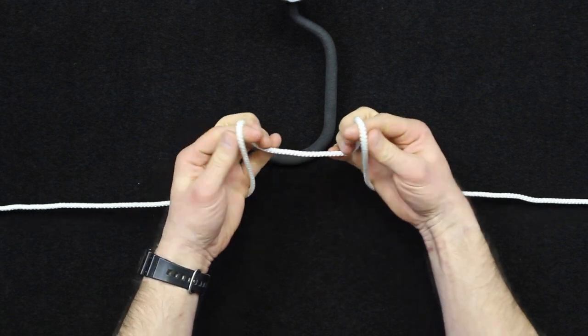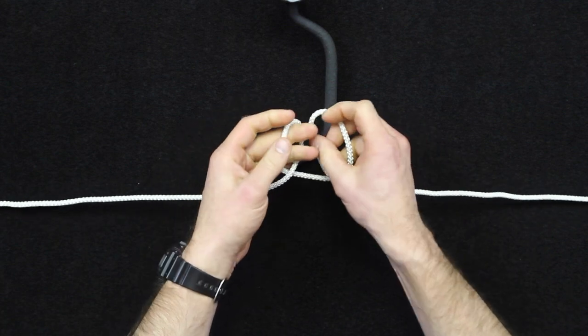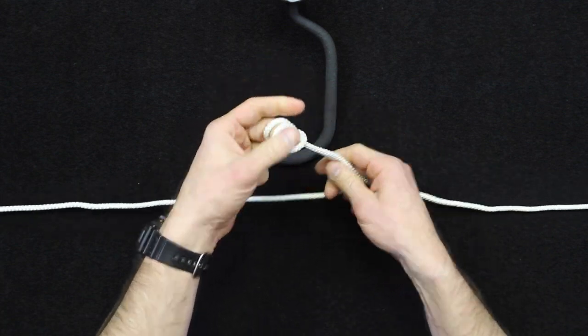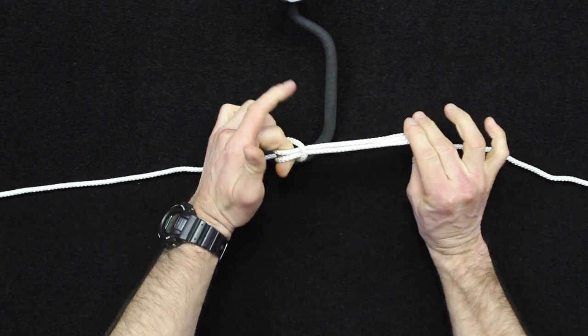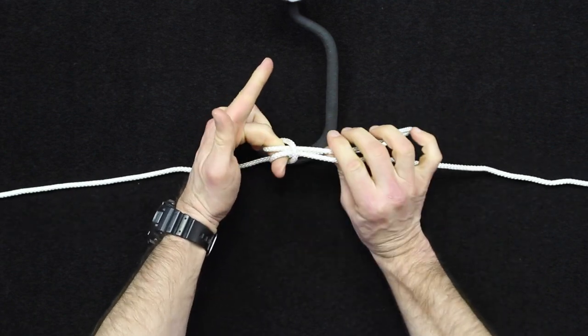Okay, to start the Cat's Paw, you're going to start with what looks like a girth hitch. So if you're familiar with the girth hitch, it's just a simple wrap like this, and that's your hitch around an object.